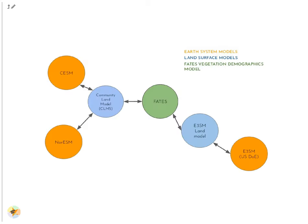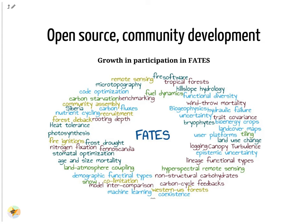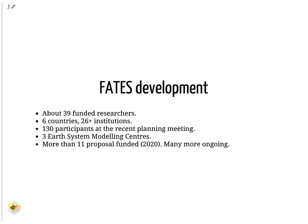On this slide, we show how the code developments are taking place. The approach is modular and each component can be developed separately. This approach significantly speeds up developments. Thanks to this modular approach, new groups joined our community and contribute to develop new modules. Many new developments have been added to FATES and we see an increasing number of developers contributing to the code. There are about 39 funded researchers working on the FATES code, spread across about six different countries and more than 26 different institutions. We had more than 130 participants at the recent planning meeting in 2020, about three Earth System modeling centers are using FATES, and more than 11 proposals were funded in 2020 for further developing FATES.